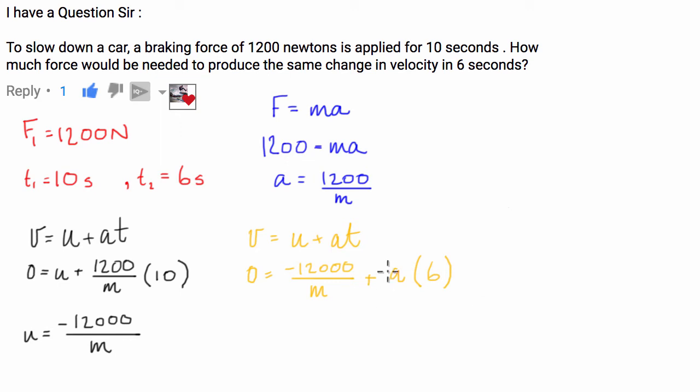So what we're going to do, I'm going to rearrange this. I'm going to take the 12,000 over M to the other side is equal to 6A.